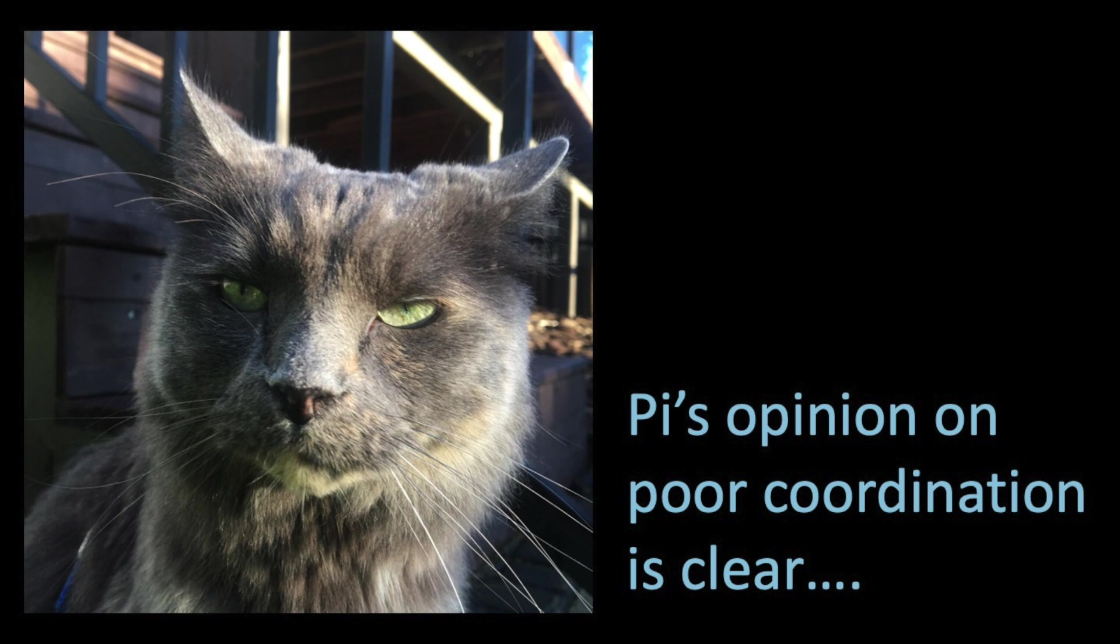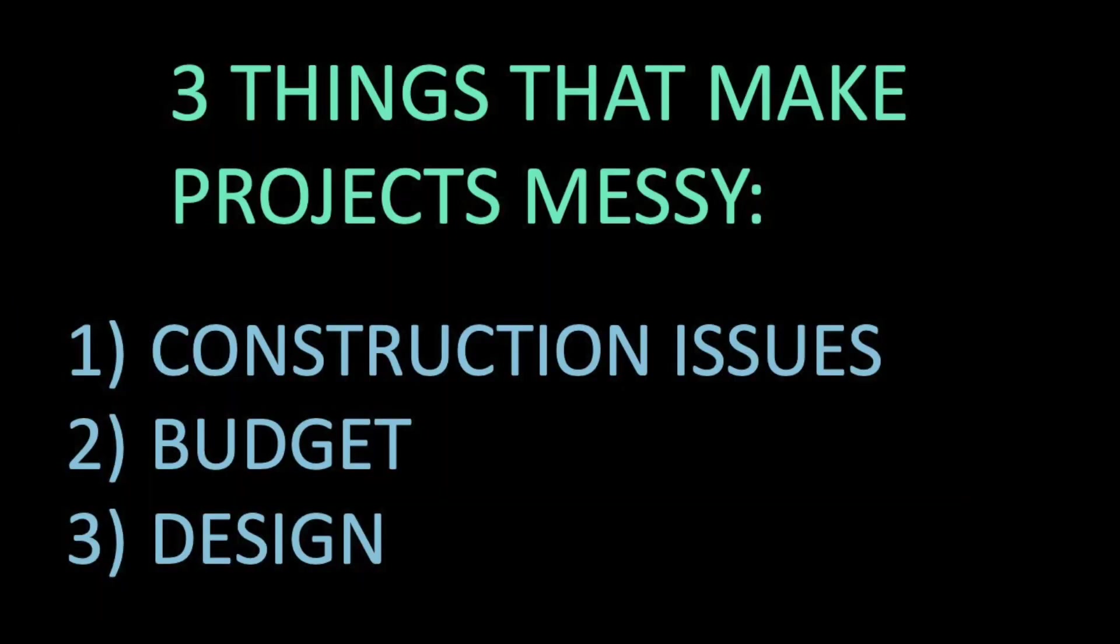There's nothing like finding out the roof needs solar panels, a skylight, and a mechanical unit after it's been designed. Other than coordination, I think there are three other big issues that make projects messy: construction issues, budget, and design.